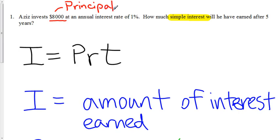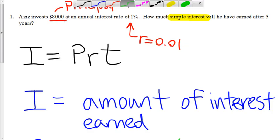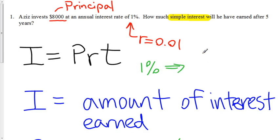And an annual interest rate of 1%. This tells me that R is equal to 0.01. If I want to change the percentage to a decimal number, I simply divide by 100. Recall that 1% becomes 1 over 100, which is 0.01. We need to have this as a decimal number for our formula.